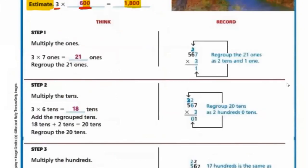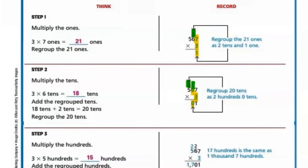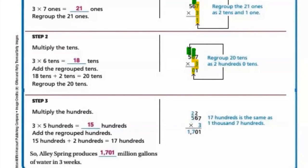Let's multiply to get the exact answer using regrouping. Starting with the ones place: 3 multiplied by 7 equals 21, put 1 and carry up 2. Then the tens place: 3 multiplied by 6 equals 18, and we have 2 up here, 18 plus 2 equals 20, put the zero and carry up 2. Next, multiply by the hundreds: 5 multiplied by 3 equals 15, and we have 2 up here, it will be 17. So our answer is 1,701.